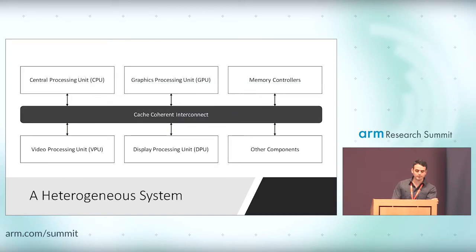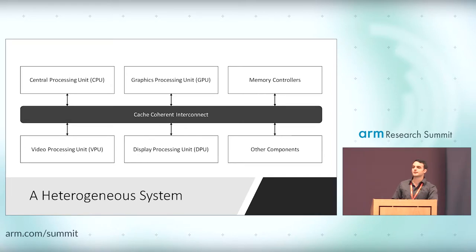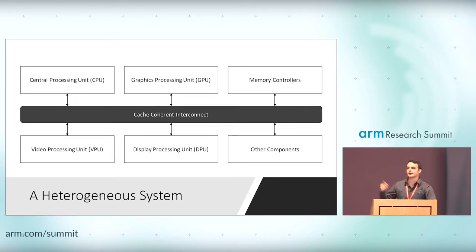What do I mean by a heterogeneous system? A lot of you already know about the CPU and GPU. There are also other accelerators. In this talk, you'll see things like the video processing unit (VPU) and display processing unit (DPU). These would all be connected to a cache coherent interconnect. You could potentially connect it to Garnet and have the simulated coherence protocol from Ruby, though we're not looking at that yet — potentially in the future.